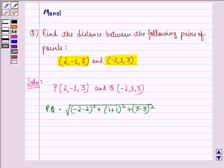Now this is equal to square root of, now minus 2 minus 2 is minus 4 and square of minus 4 is 16. So 16 plus 1 plus 1 is 2, square of 2 is 4, 3 minus 3 is 0. Now this is equal to square root of 16 plus 4, 20 and this can be written as 2 root 5.